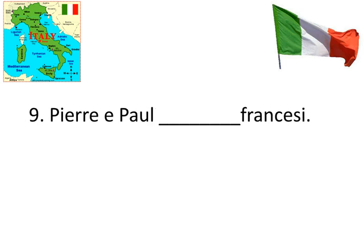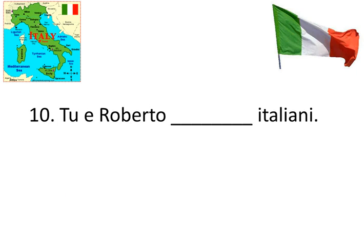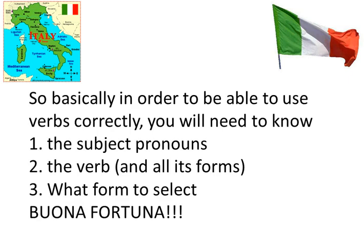Numero 9: Pierre e Paul blank francesi. Pierre and Paul are French. Two guys' names — so this is not just one person, lui. It's two or more people, therefore you're going to have to say they, which as you know is loro. The loro form of essere is sono. And our last number for this particular exercise is numero dieci: Tu e Roberto blank italiani. This is just like what we just saw — tu form plus somebody else makes it voi, therefore you need the voi form of essere, which is siete.